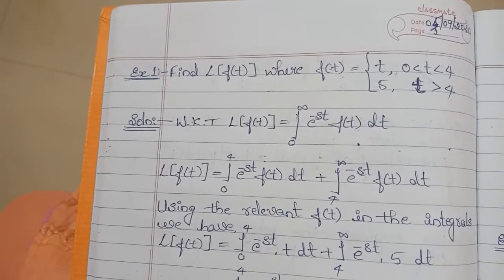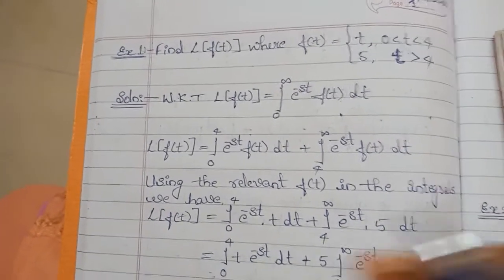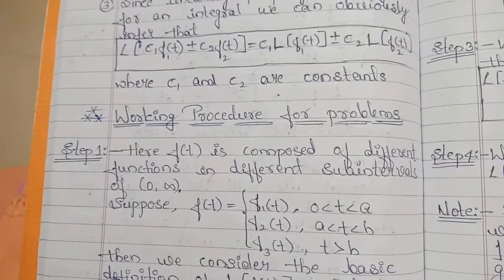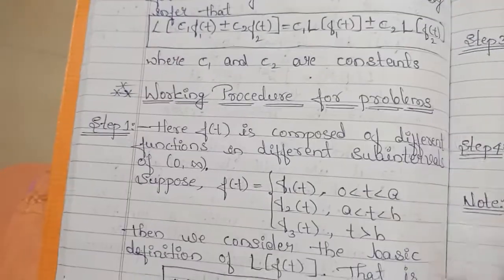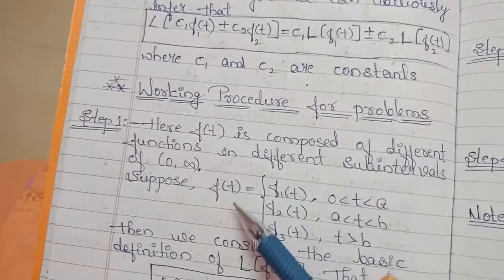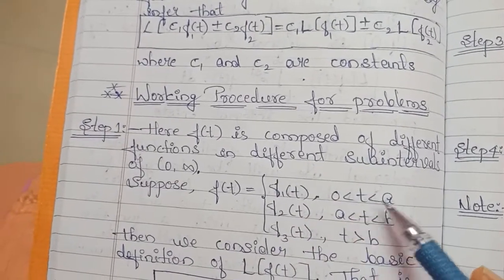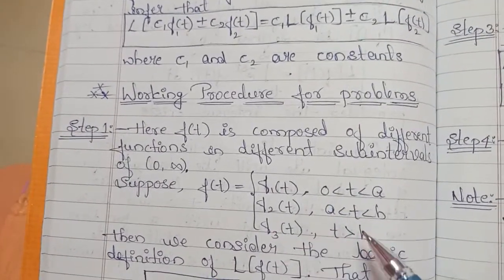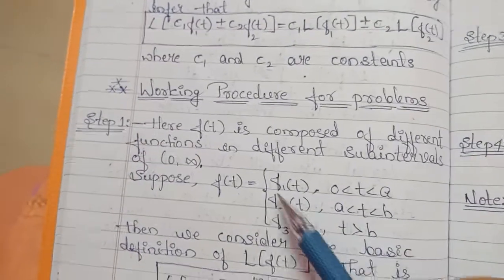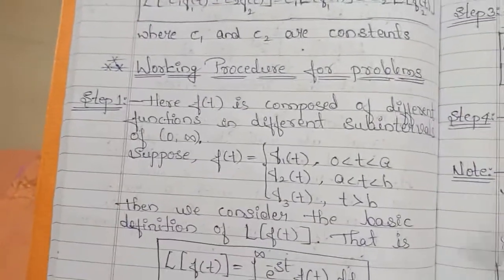Hello everyone, today we will discuss examples on Laplace transforms. In the last class we discussed the definition of Laplace transform, some conditions, and the working procedure for problems where f(t) is a piecewise function: f1(t) for t between 0 and a, f2(t) for t between a and b, and f3(t) for t greater than b — meaning f(t) is composed of different functions.